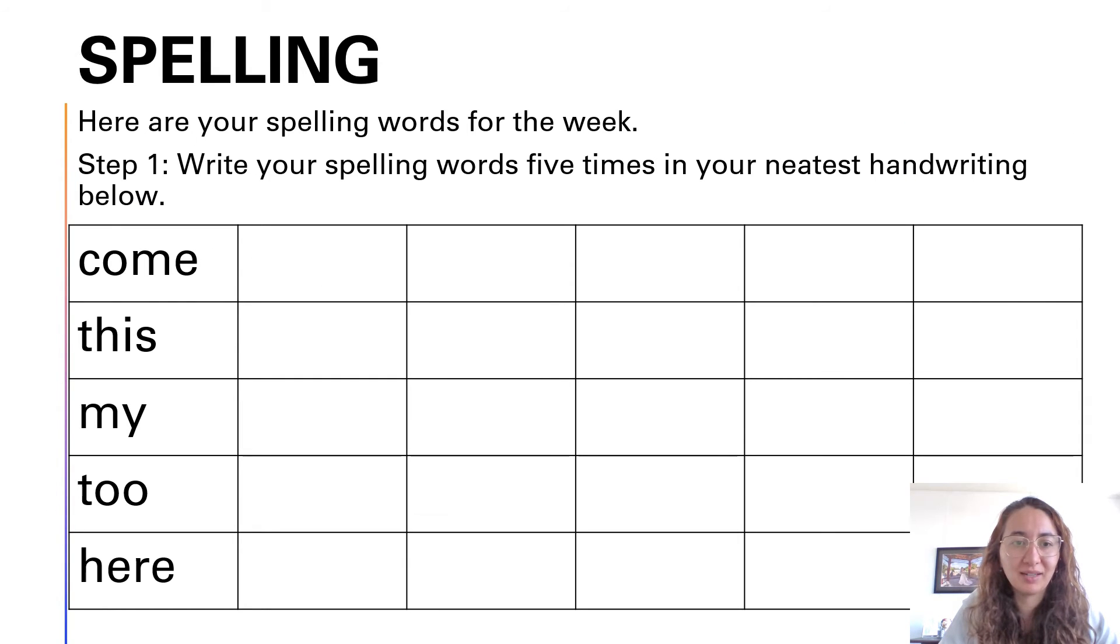Let's just put my little marker here. So come, this, my, to, and here. Now with the word come, can you come to the park to play? Or this would be, this is such a cool game. My would be, my friend is super lovely. Two. Now this two is tricky. It's not the number two. It's I have that toy too. So that's the two that we're using today. You might also use it as, that's my favorite color too. And then we have the word here. Like, here is my pink pen.